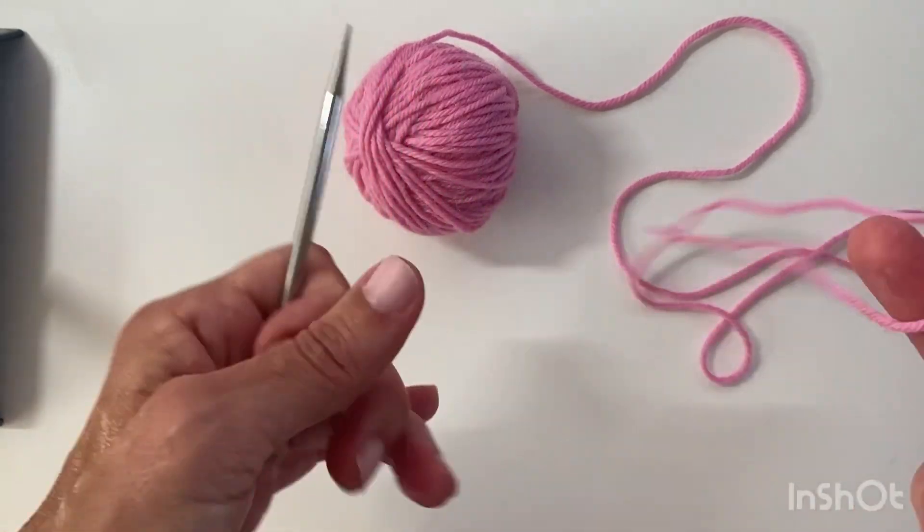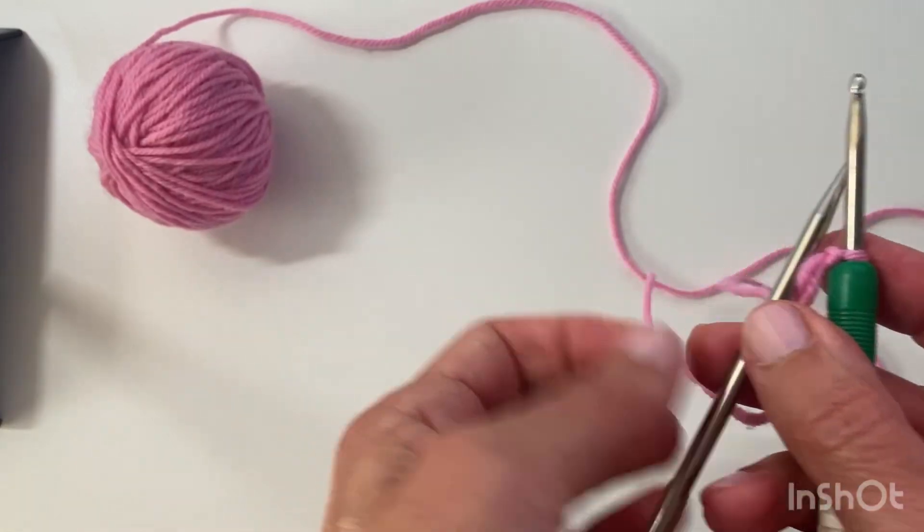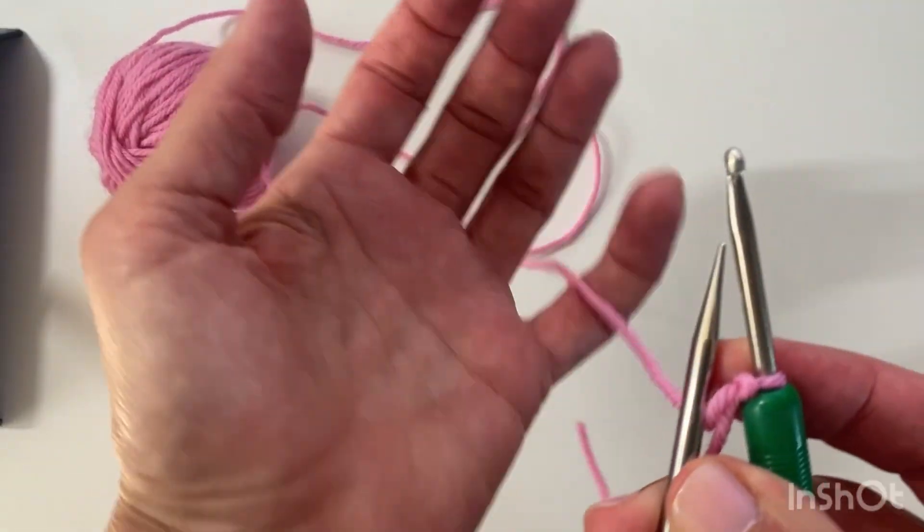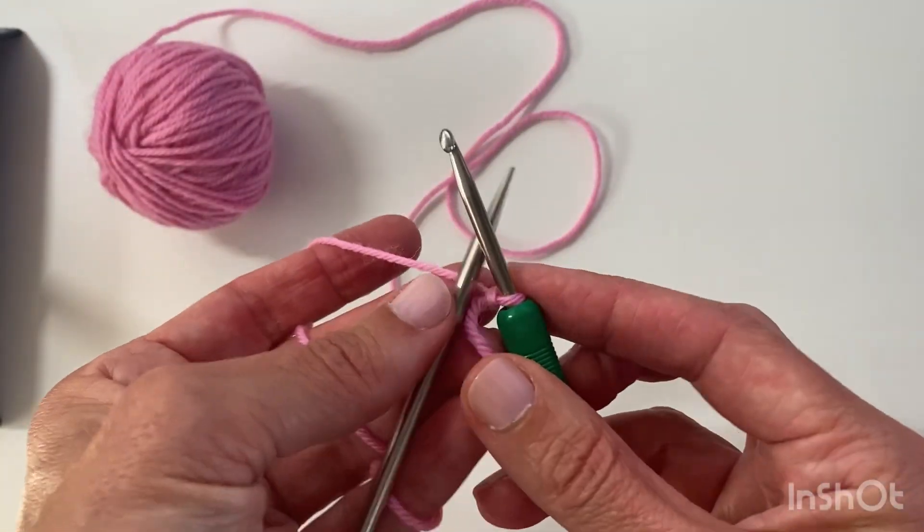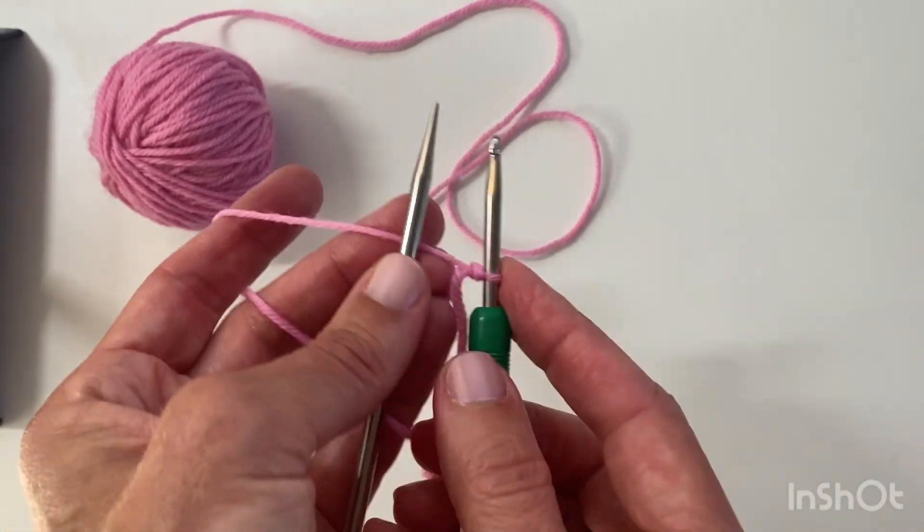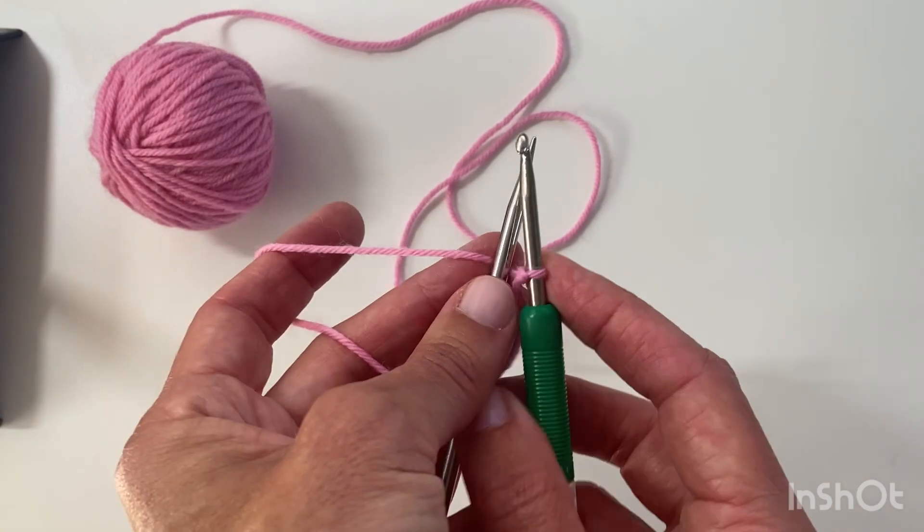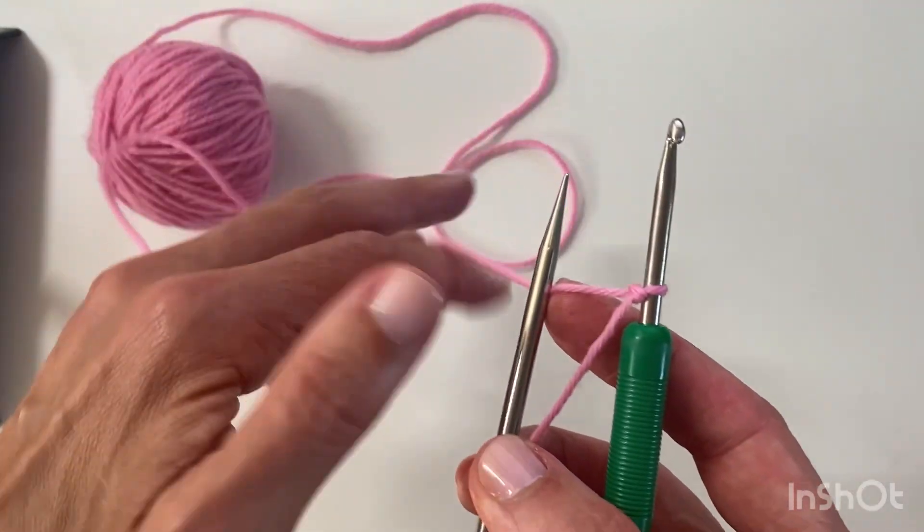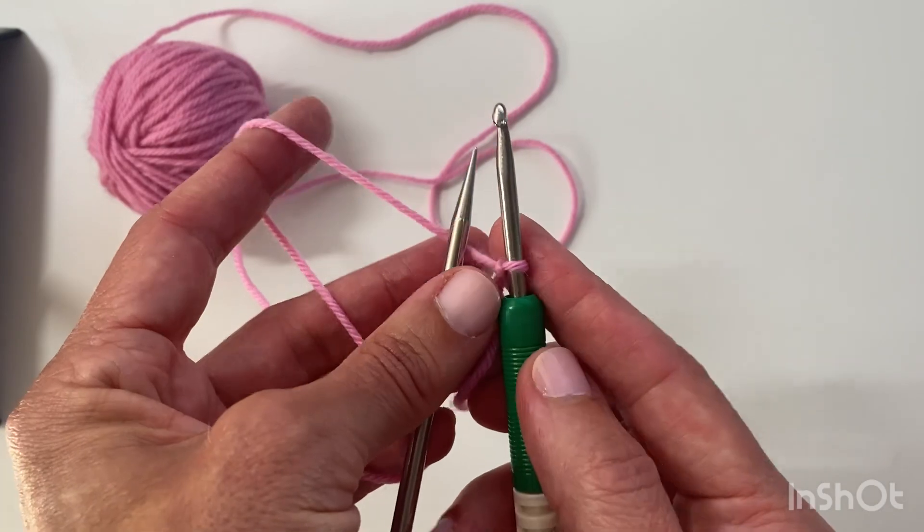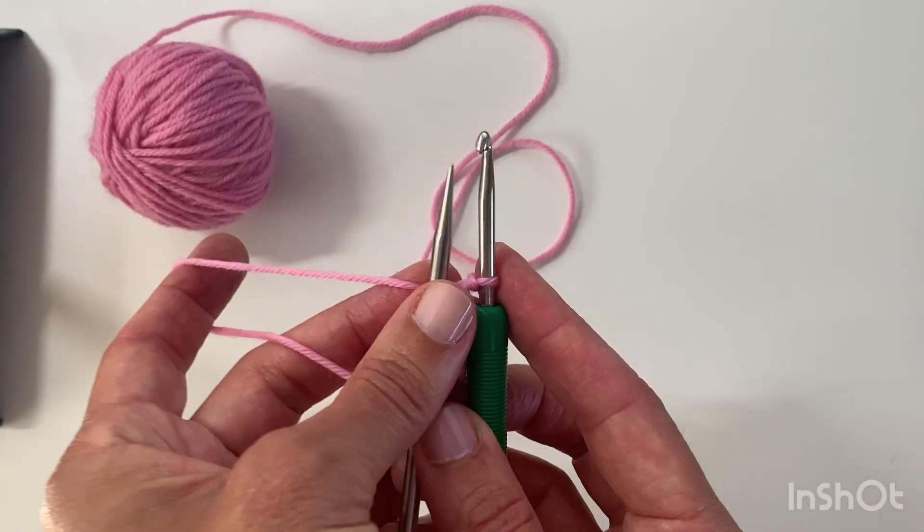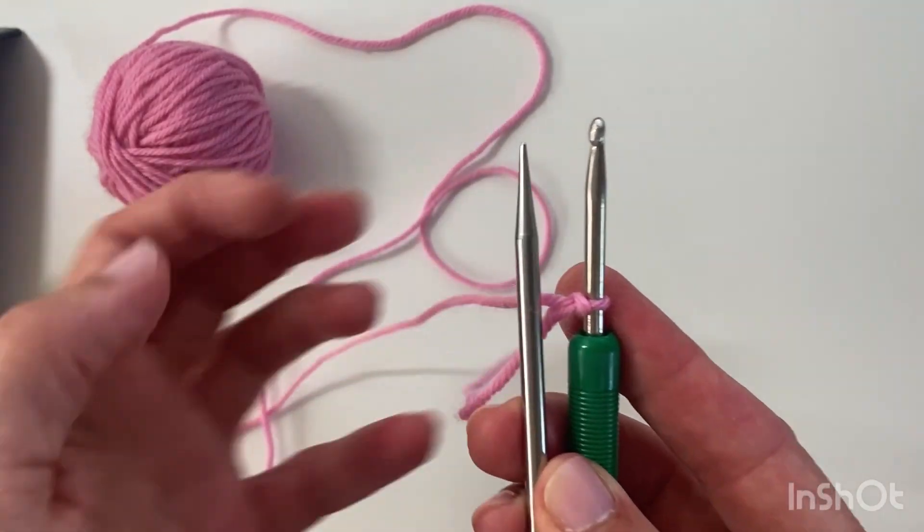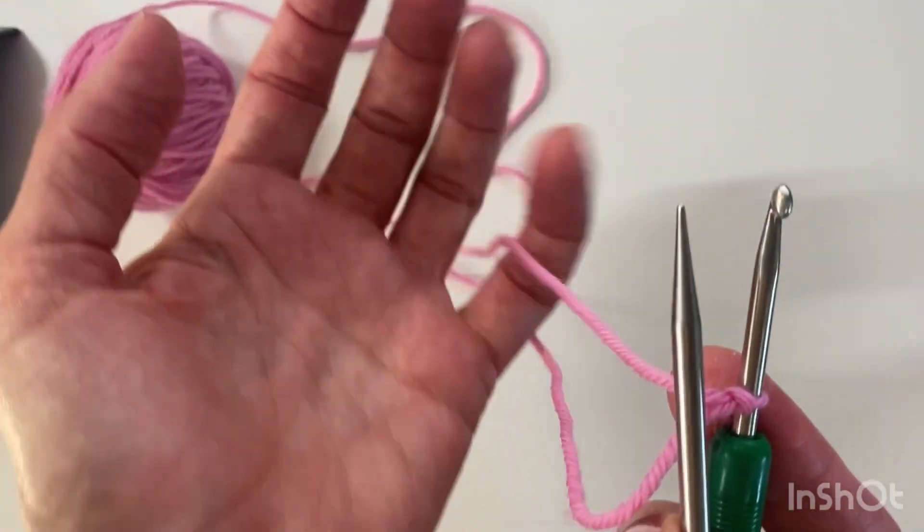And then you need to have the yarn with the ball going underneath the knitting needle. So I've got the crochet hook in my right hand with the tail, and then the ball of yarn going off to the left, and I've got the yarn going underneath the needle. So I'm just going to use my left hand to tension the yarn.